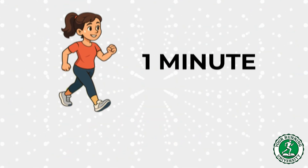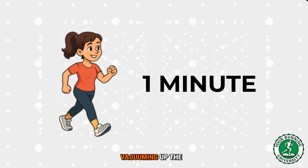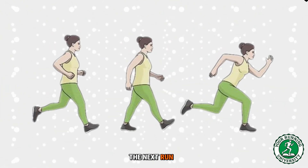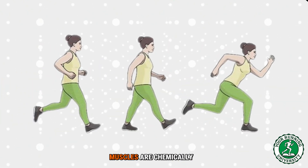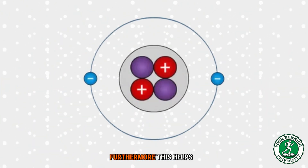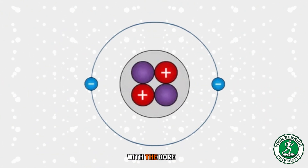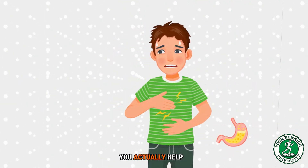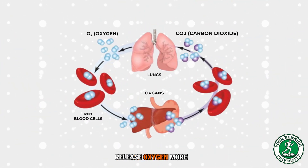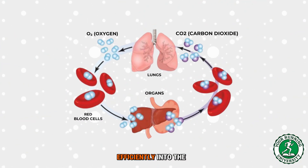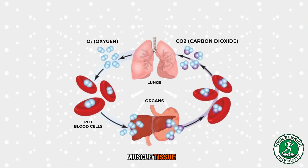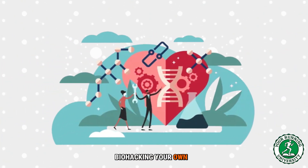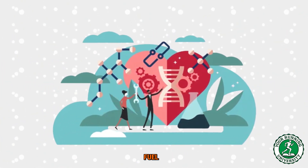The oxygen you breathe during the walk helps oxidize the lactate. Think of the walking break as a vacuum cleaner — you run for two minutes creating a bit of mess, then you walk for one minute vacuuming up the mess. When you start the next run interval, your muscles are chemically clean. Furthermore, by clearing the acidity through the Bohr effect, you actually help your red blood cells release oxygen more efficiently into the muscle tissue. You are literally biohacking your own bloodstream to deliver more fuel.